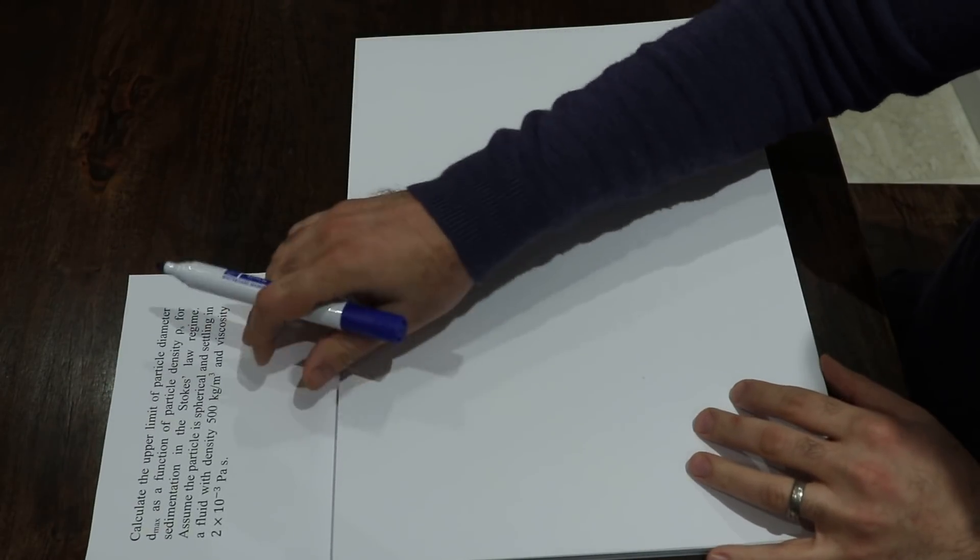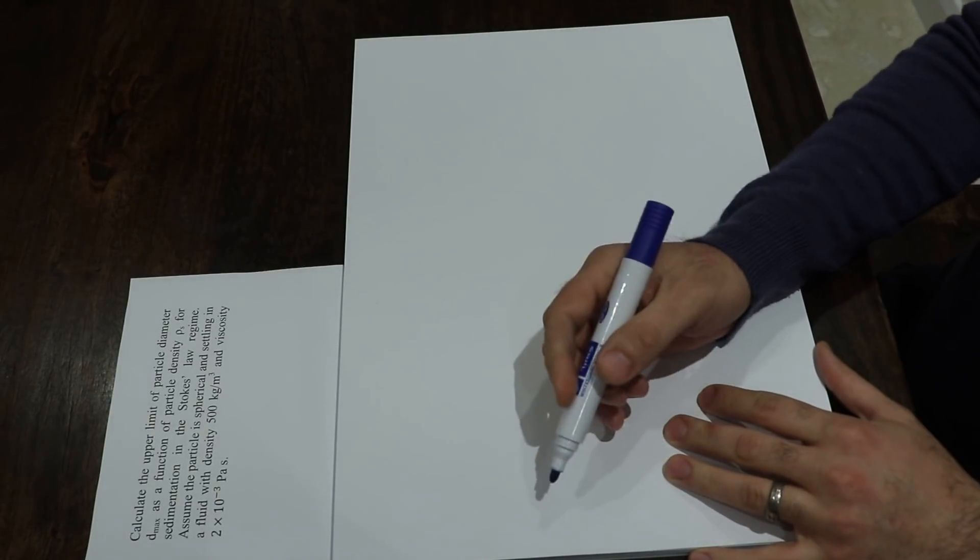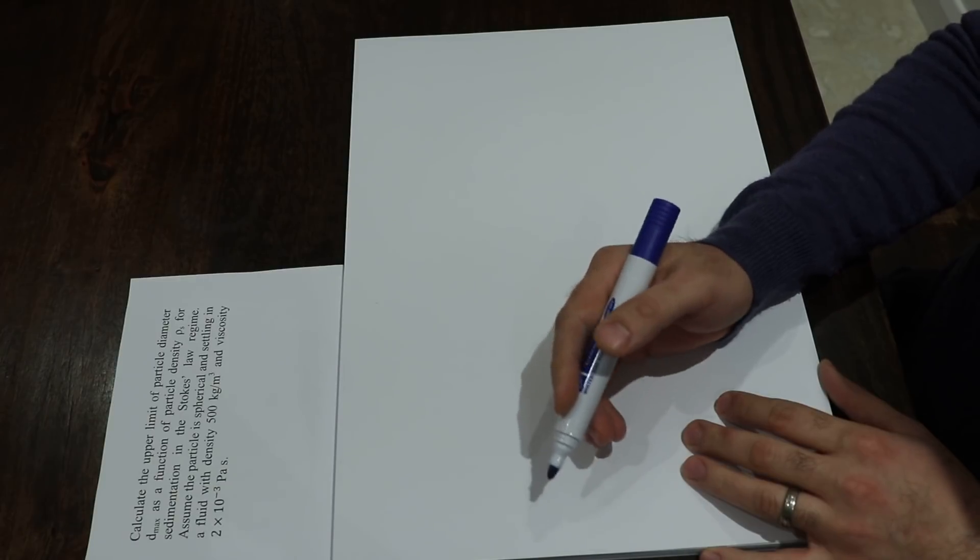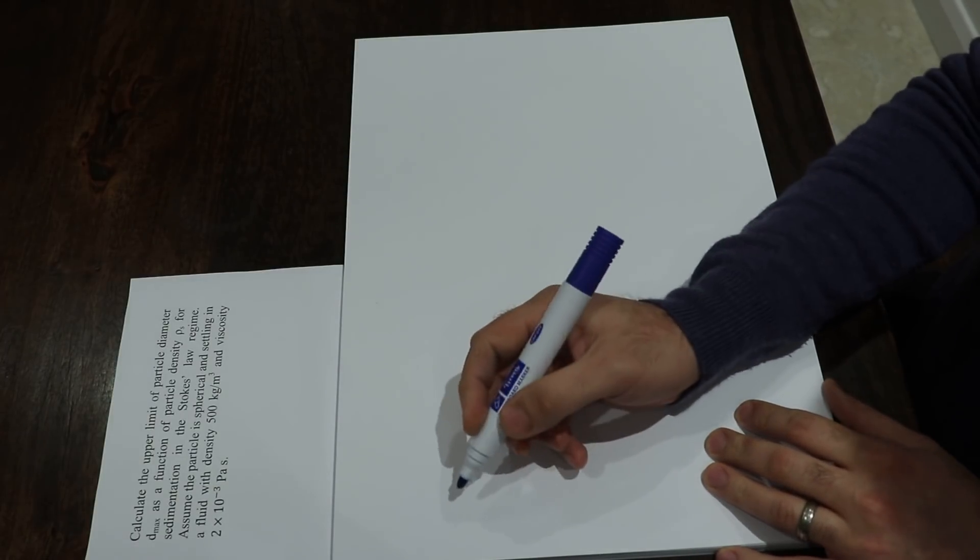We know that in the Stokes regime, the Reynolds number should be less than 0.3. In other words, the upper limit of the Reynolds number should be 0.3.